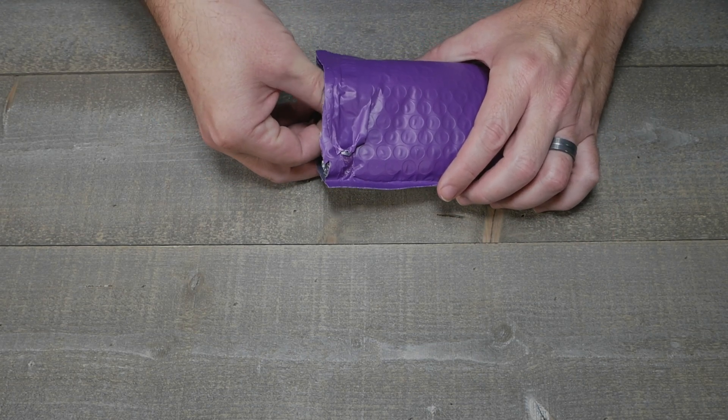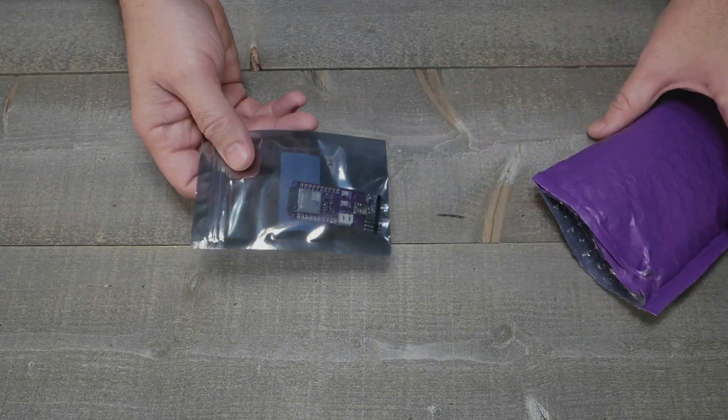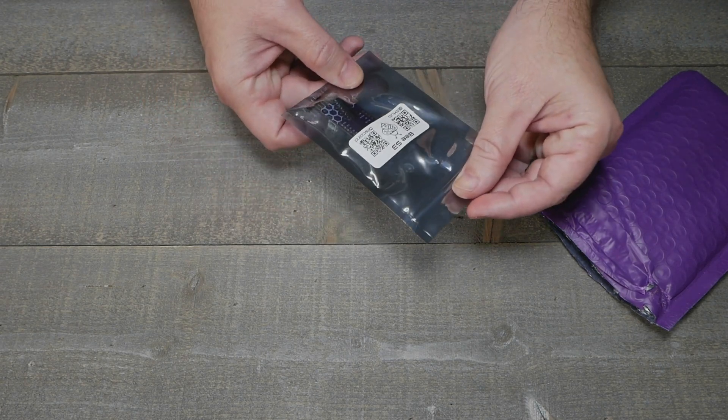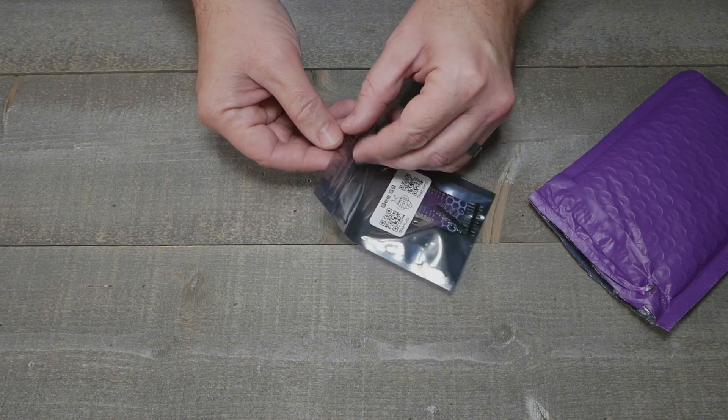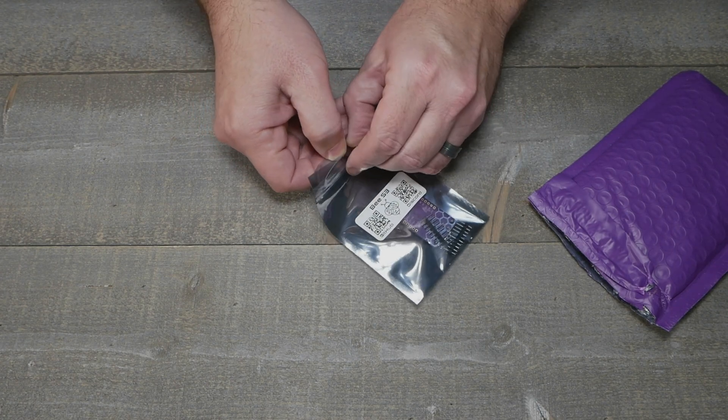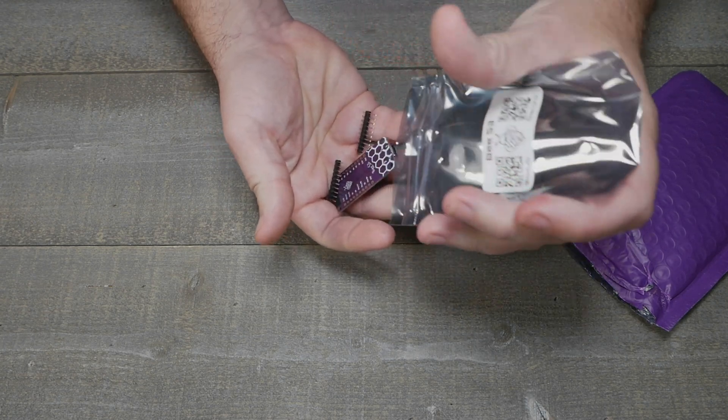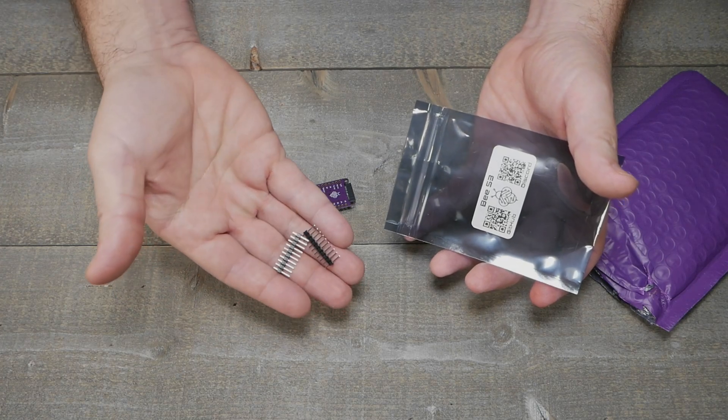I saw this on Reddit and knew I had to snag one due to how cheap they were at the time and how cool they were. This is a BS3, and if you're not familiar with it, it's an ESP32 chip. I'll get the crinkling noises out of the way. They're not going to solder these pins on for you, which is pretty cool, especially if you didn't want them in your particular project.